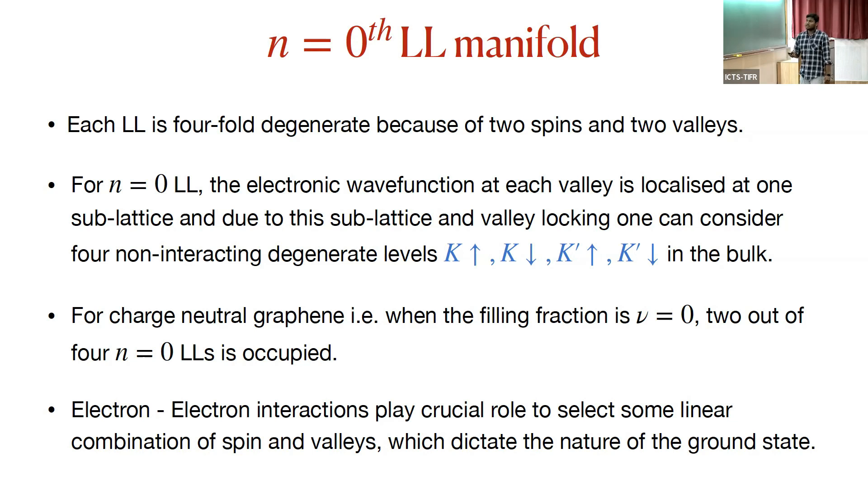Now when we say charge neutral graphene, the filling fraction is defined to be zero, so two out of these four n=0 Landau levels have to be filled. In non-interacting limits, these are all degenerate. So you need electron-electron interactions which play a crucial role to select some linear combination of spin and valley indices, and that in general dictates the nature of the ground state.